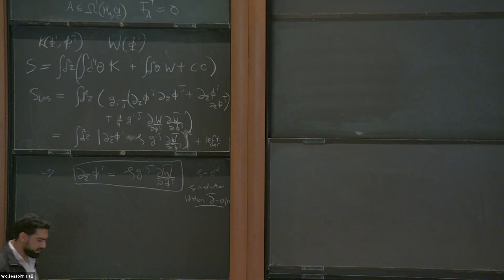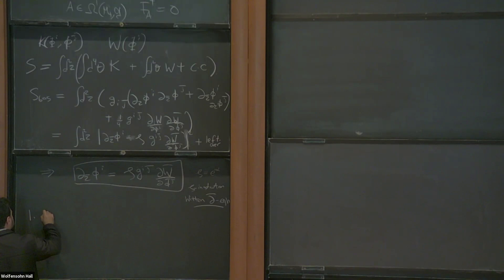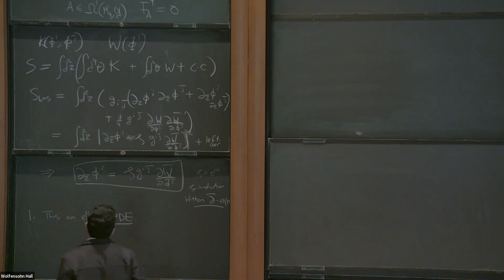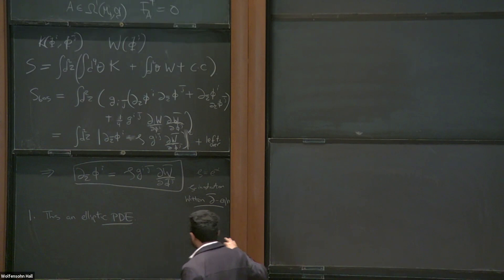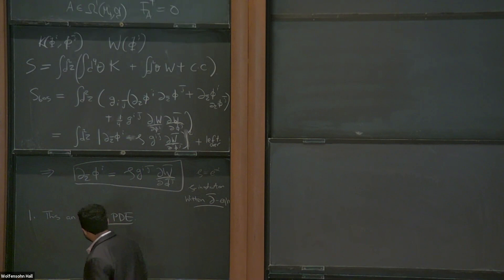Let me tell you some properties of this instanton equation. The first property is that this is an elliptic PDE. This is essentially apparent from how I derived it — it comes from the Euclidean two-dimensional action. This is going to help us in some later applications — it's a technical point but it will be important.